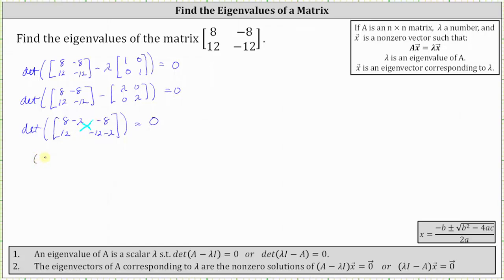So we have the quantity (8 - λ) times the quantity (-12 - λ) minus the product of -8 and 12 equals zero.